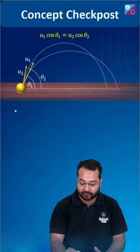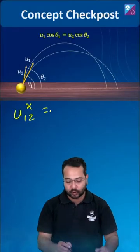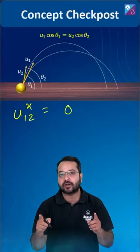Now the relative velocity of 1 with respect to 2, the x component is going to be equal to 0 because the horizontal velocities are the same.